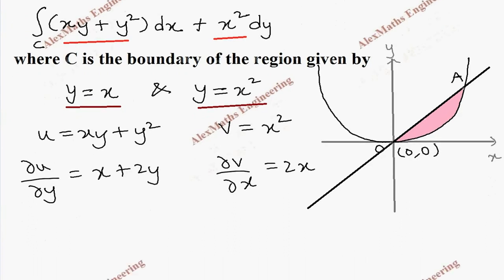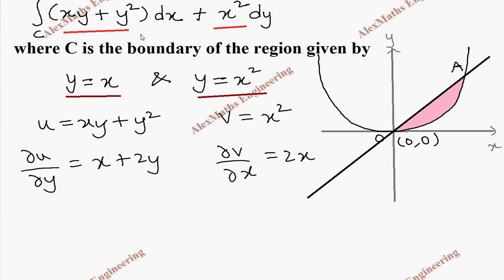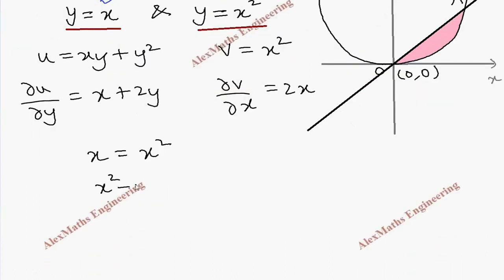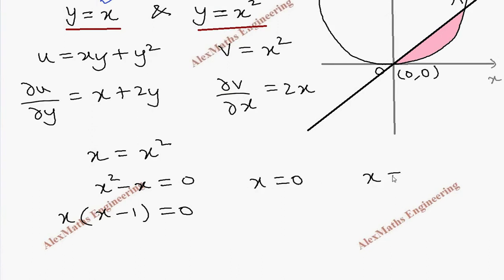To find the meeting point we equate both y values. Equating gives x equals x squared, so x squared minus x equals 0. Taking x common: x(x minus 1) equals 0. From this we get x equals 0 and x equals 1, with corresponding y values 0 and 1. So the meeting points are (0,0) and (1,1).